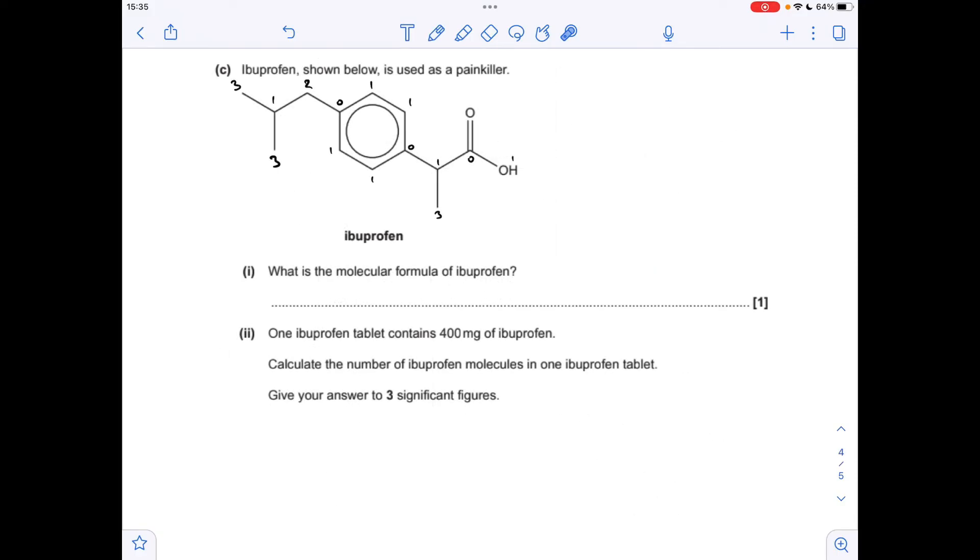Moving on to part C. So you'll notice I've added some numbers here. So these are all the carbons and how many hydrogens they've got attached. So what's the molecular formula of ibuprofen? It's C13H18O2.